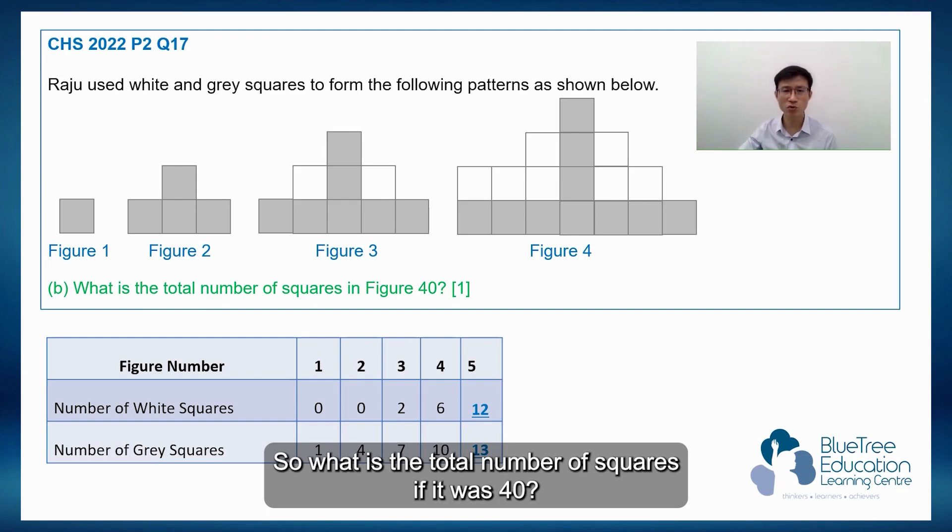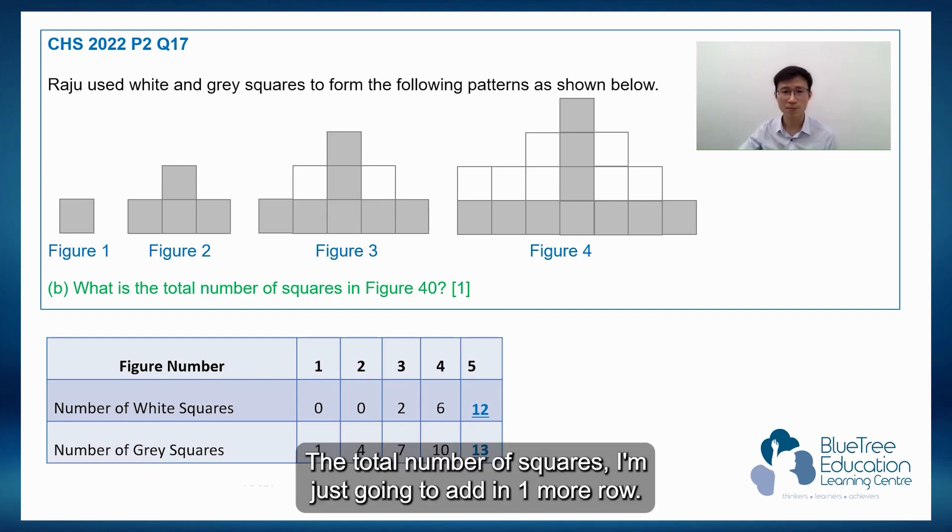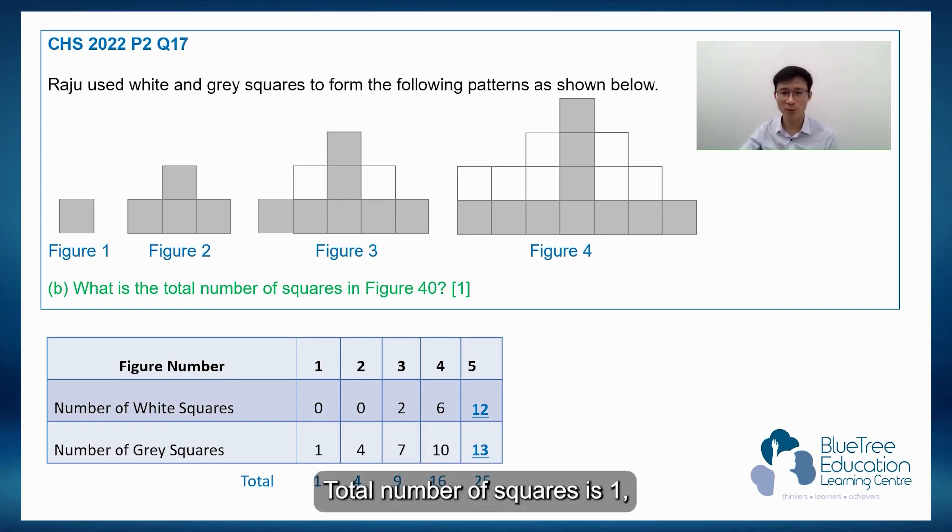So what is the total number of squares in figure 40? For the total number of squares, I'm just going to add in one more row. The total for figure 1 is 1. For figure 2 is 4. For figure 3 is 9. Figure 4 is 16. Figure 5 is 25.